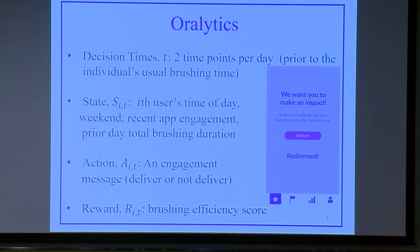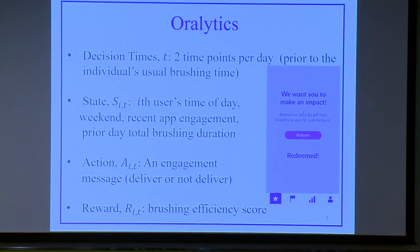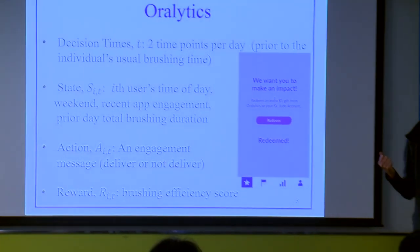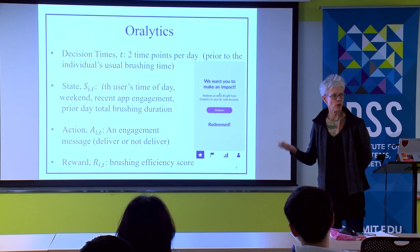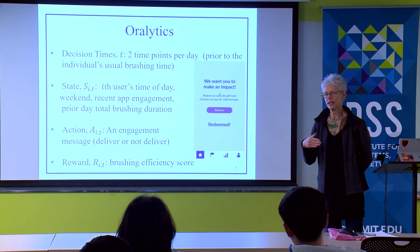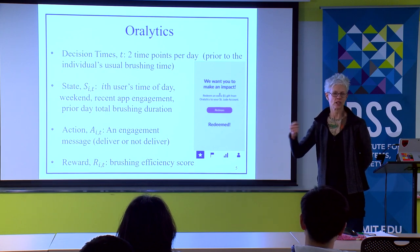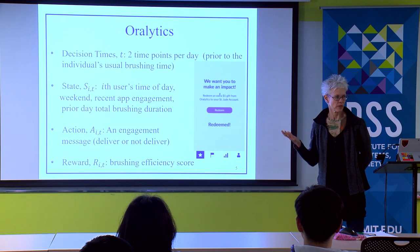Oralytics only has two decision times per day, 70 days — only 140 times per individual. Right away you should be concerned about the use of an RL algorithm, because we know that they learn relatively slowly. The state is a variety of data from the app and from the toothbrush. The action — which is pretty common with these apps — is that the algorithm will focus on: send a suggestion versus not. This has to do with the signal-to-noise ratio.